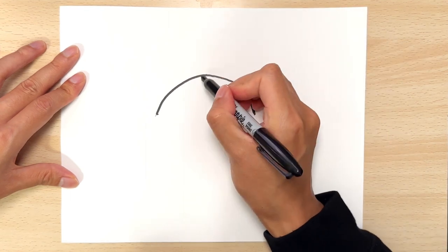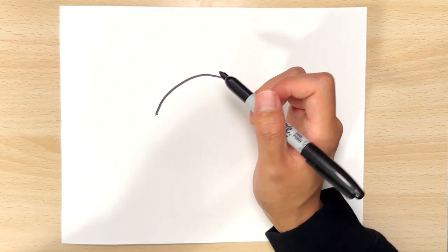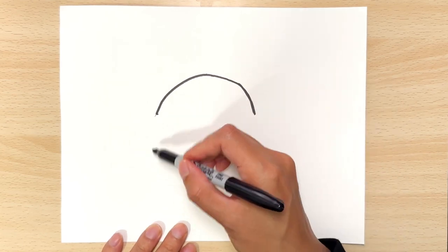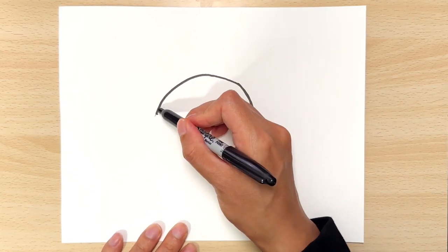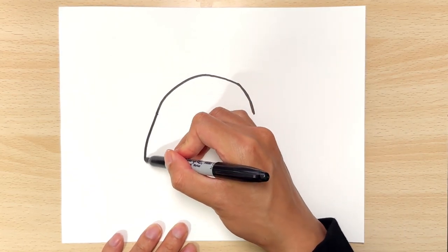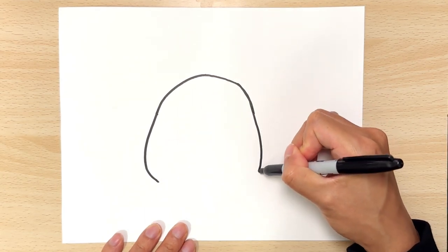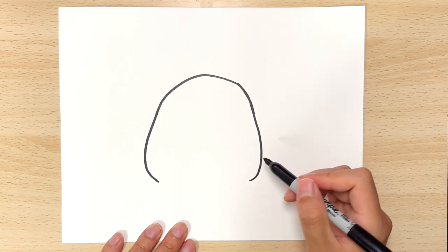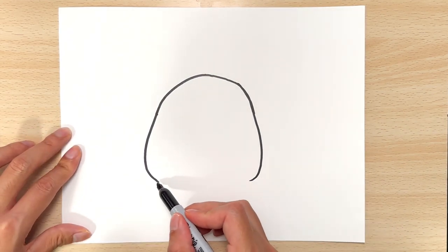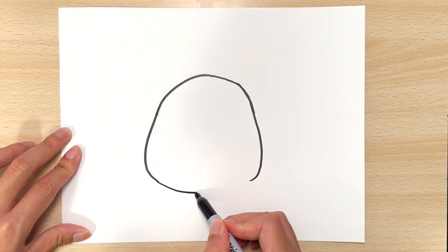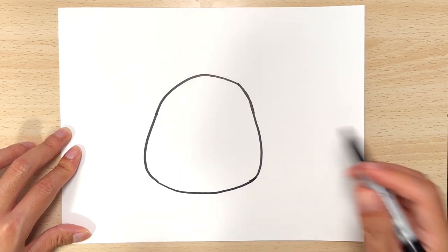It doesn't have to be perfect. Every drawing could be a little bit different. Now continuing with that, we're gonna go down and curve a little bit from the bottom, then connect to the other side.